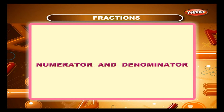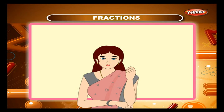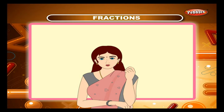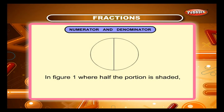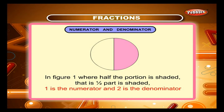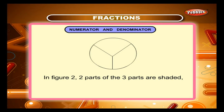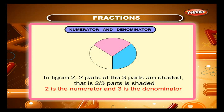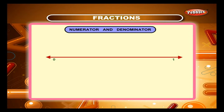Numerator and Denominator. Let us now see what is a numerator and what is a denominator. In figure 1, where half the portion is shaded — that is, one by two part is shaded — one is the numerator and two is the denominator. In figure 2, where two parts of the three parts are shaded — that is, two by three parts is shaded — two is the numerator and three is the denominator.